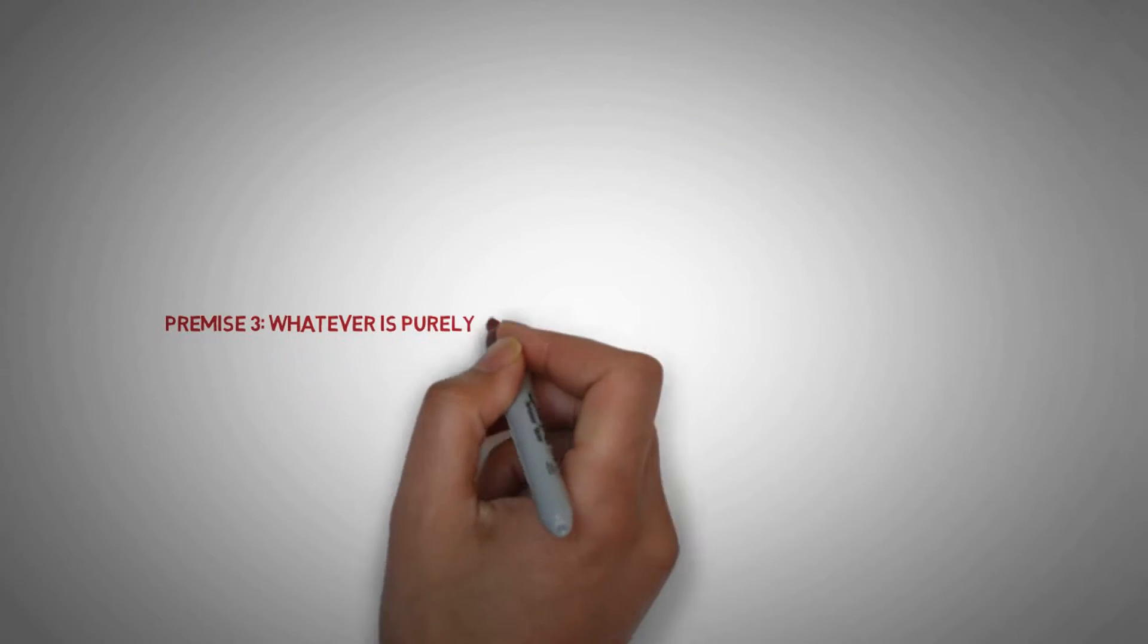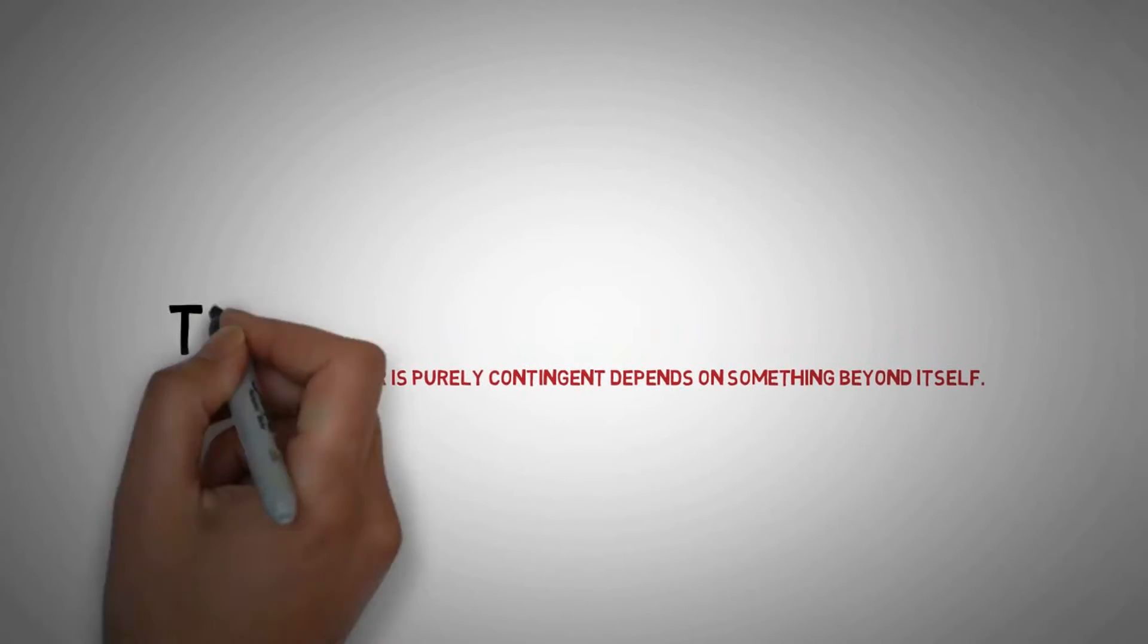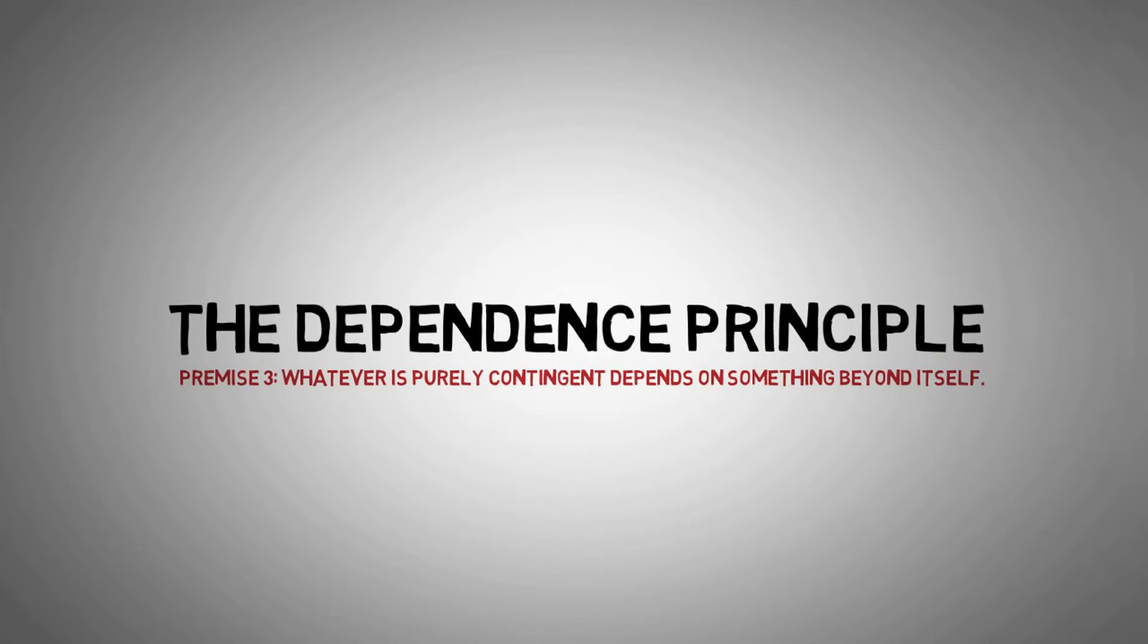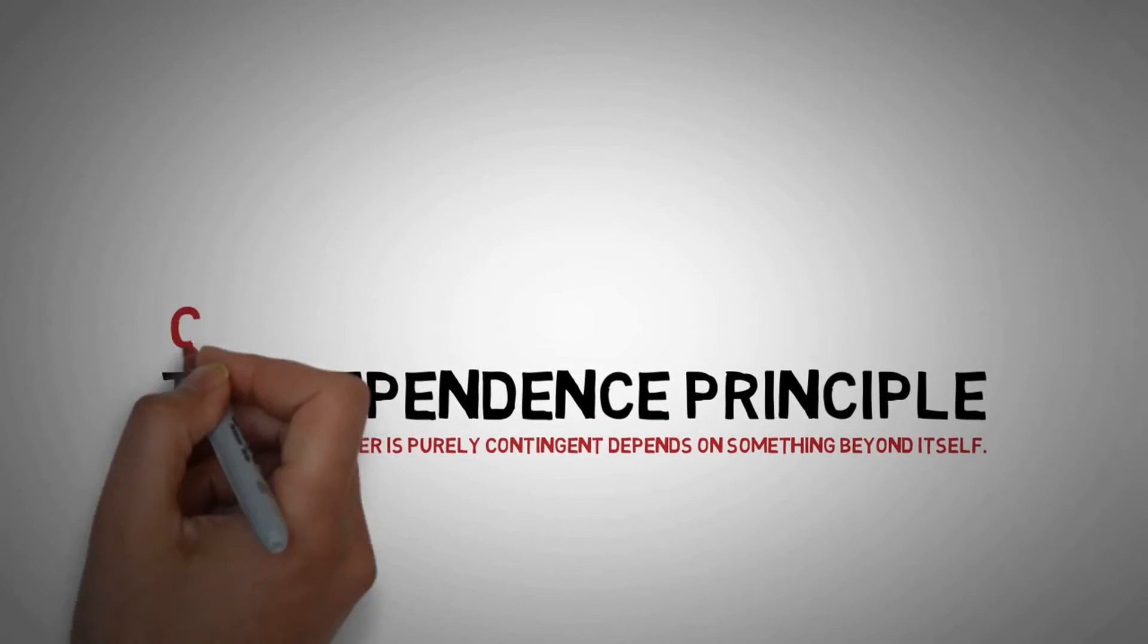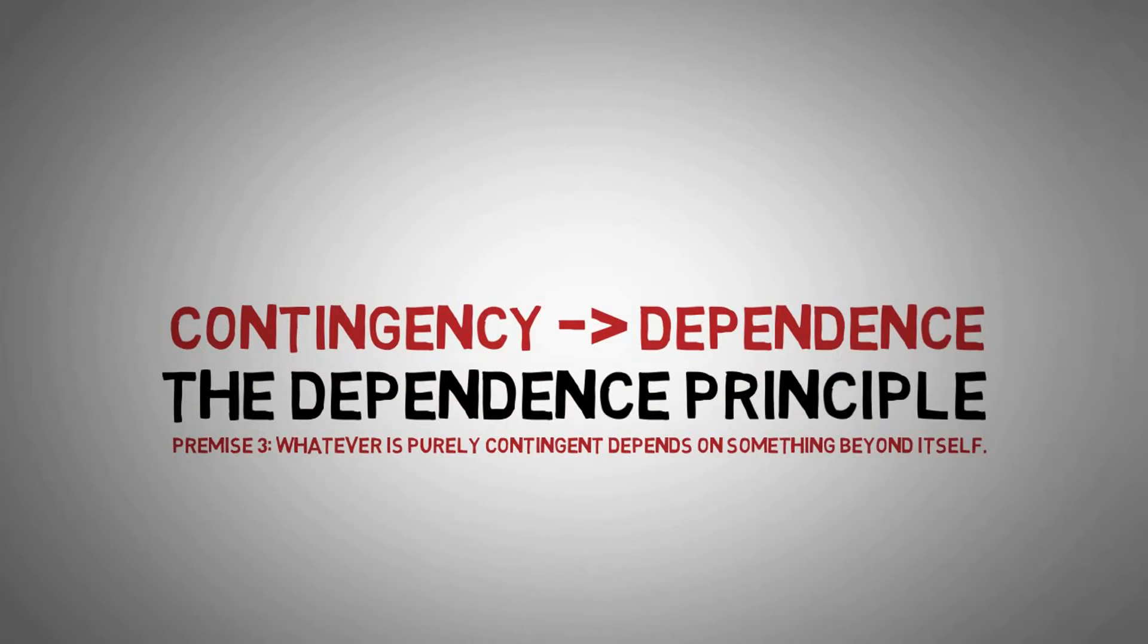Let's consider next the third premise. Every purely contingent reality depends on something beyond itself. Let's call this the dependence principle. The dependence principle, it may sound abstract, but the basic idea is that contingency implies dependence.